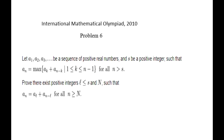This is problem number 6 of the International Math Olympiad 2010. There is a given infinite sequence of positive real numbers such that for a given positive integer s, all members of this sequence whose index n is greater than s, a_n equals the largest sum of a_k plus a_{n-k} where index k varies from 1 to n minus 1. Prove there exist a positive integer l not greater than s, and a large enough integer N, such that for all n greater than N, a_n equals a_l plus a_{n-l}.